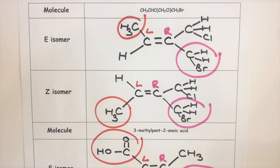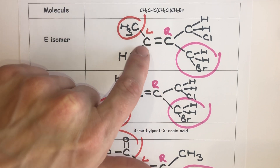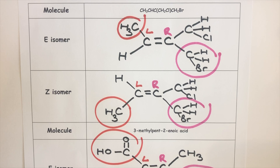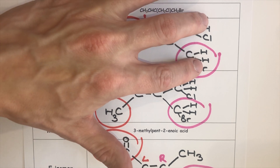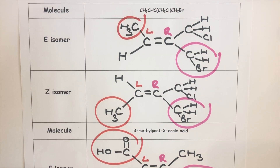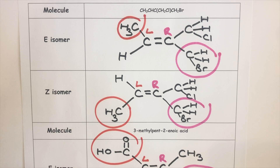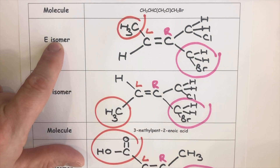There are cases where you have to walk further through the structure to find the high priority group. For the left-hand carbon, carbon versus hydrogen — atomic number 6 versus 1 — means the top section is high priority. For the right-hand carbon, we have carbon versus carbon, so no immediate victor. Going to the next atoms, we have two H's and a chlorine versus two H's and a bromine. Because bromine has a larger atomic number than chlorine, the bottom group is higher priority. The two high priority groups are across from each other, so this is the E isomer.